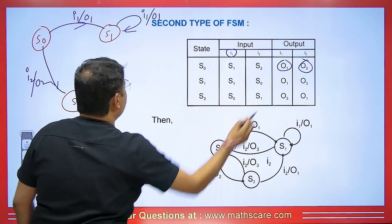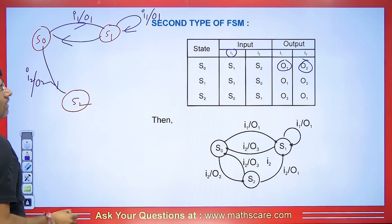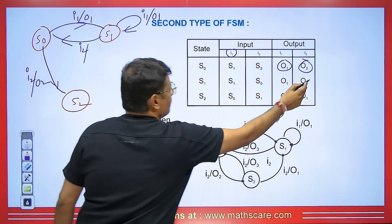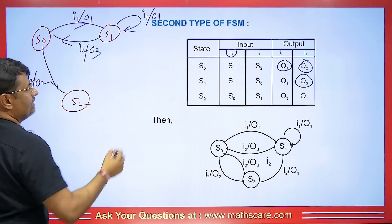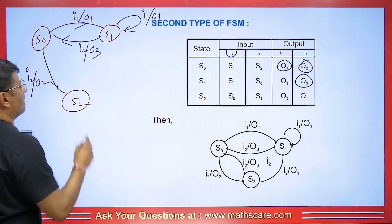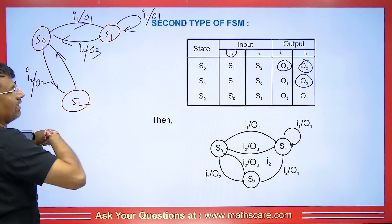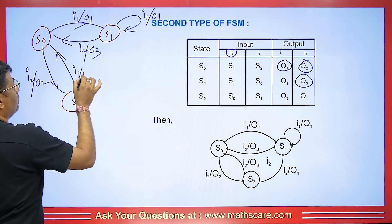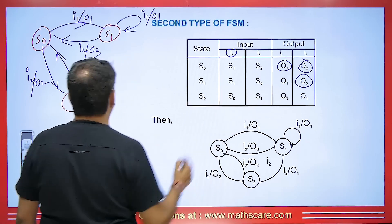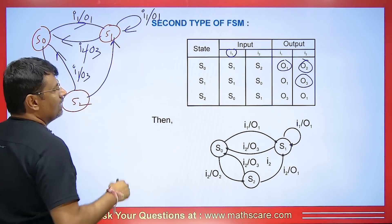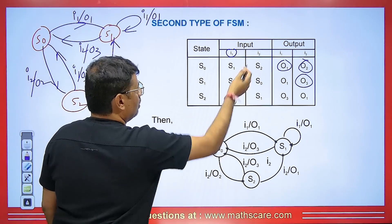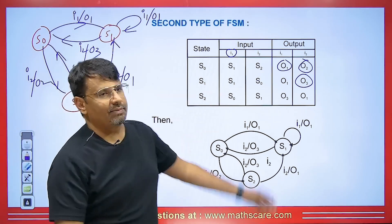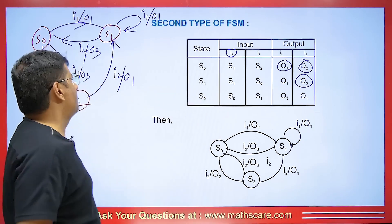S1 is going to S0 with input I2 and output O3. S2 is going to S0 with input I1 and output O3. S2 is going to S1 with input I2 and output O1. This is how we make a diagram for a two-input two-output finite state machine.